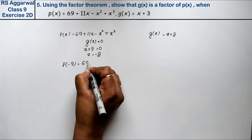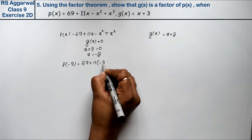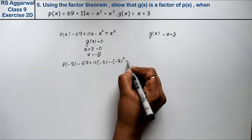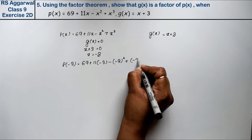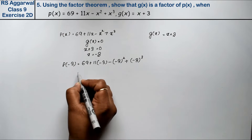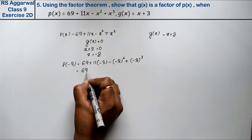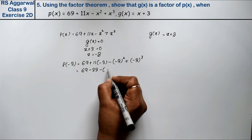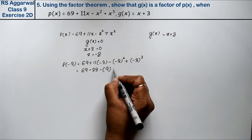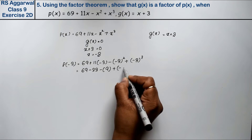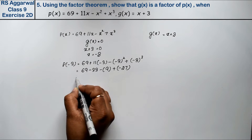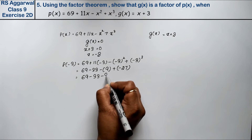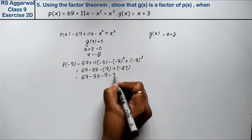Now we substitute x equals minus 3 into p(x): 69 plus 11 times minus 3, minus minus 3 squared, plus minus 3 cubed. So that gives us 69 minus 33 minus 9 plus minus 27. Note: even power is positive, odd power is negative.